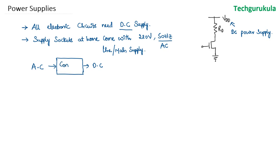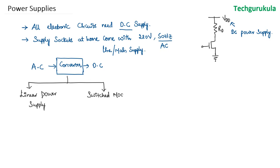We call this a converter, which will convert AC to DC, where we need the DC supply to power all the circuits that we have. The converters we are talking about — AC to DC — are of two types: one is a linear power supply and the other is a switched mode power supply.